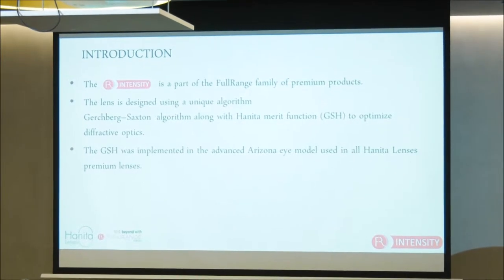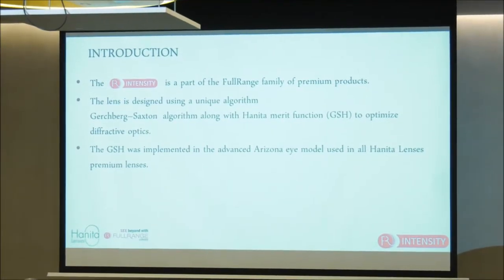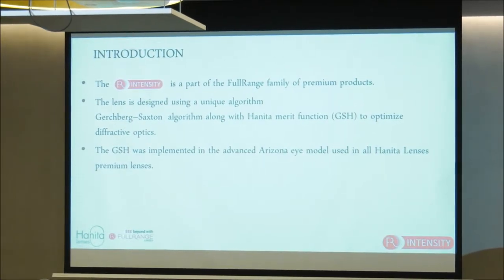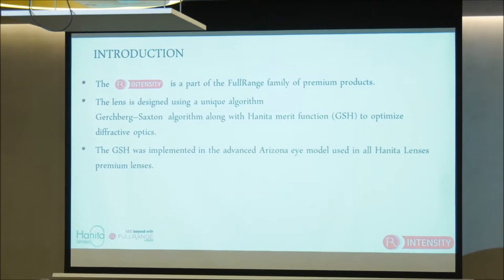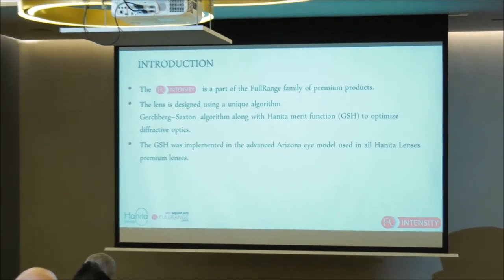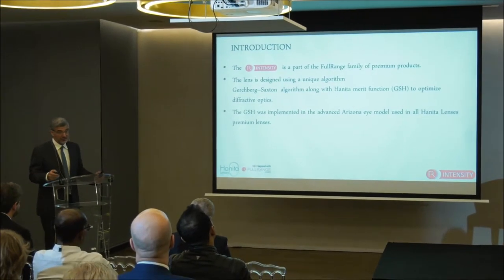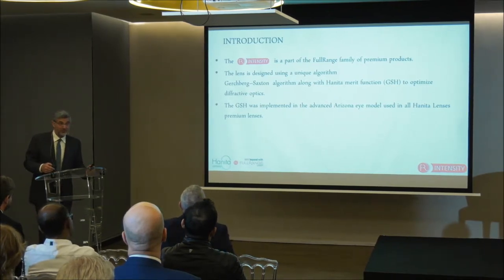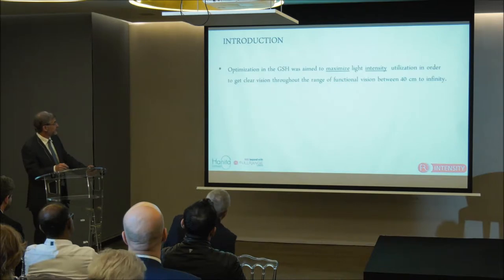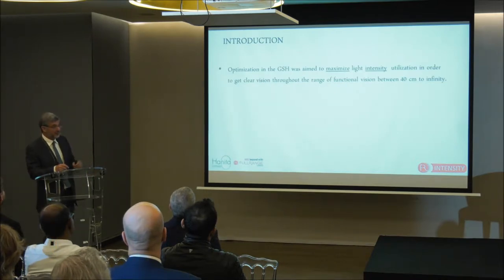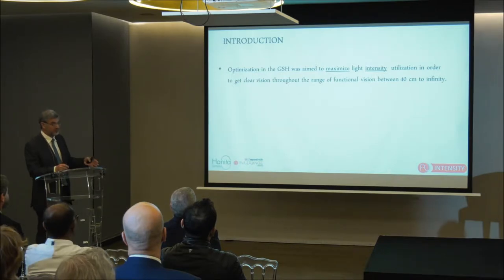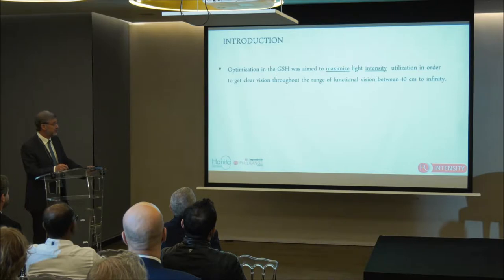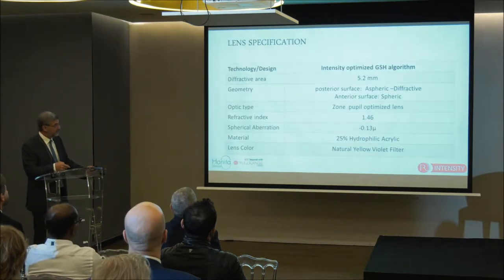This lens is called the Intensity — in a minute I'll show you why — and this is only part of the full range of lenses. It is designed by an algorithm called the Gerchberg-Saxton algorithm, combined with Hanita's merit function, altogether called the GSH algorithm. They also use the Arizona eye model, which is very useful for these designs. The idea was to create a lens that provides the most efficient way to distribute energy, maximizing the intensity at the foci we desire while minimizing light that is not effective.